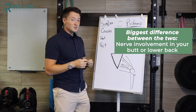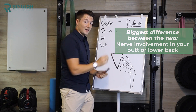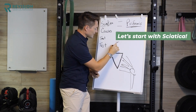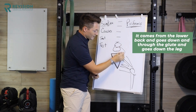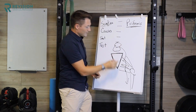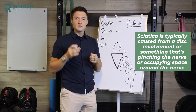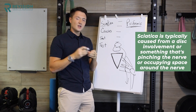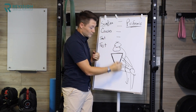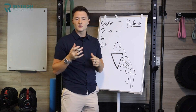The biggest difference between these two is where that nerve involvement occurs — either in your butt or in your lower back. Sciatica comes from the lower back and goes down through the glute and down the leg. It's typically caused by disc involvement or something pinching the nerve, or occupying space around the nerve to give you symptoms. We're talking disc herniations or some sort of stenosis.